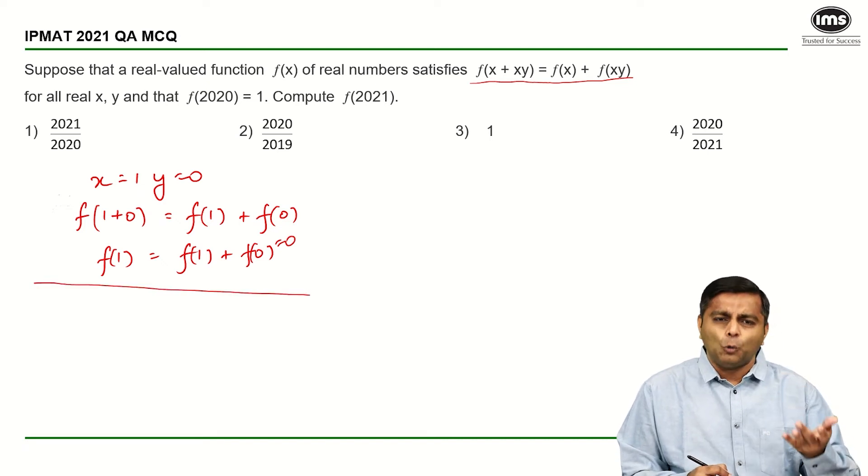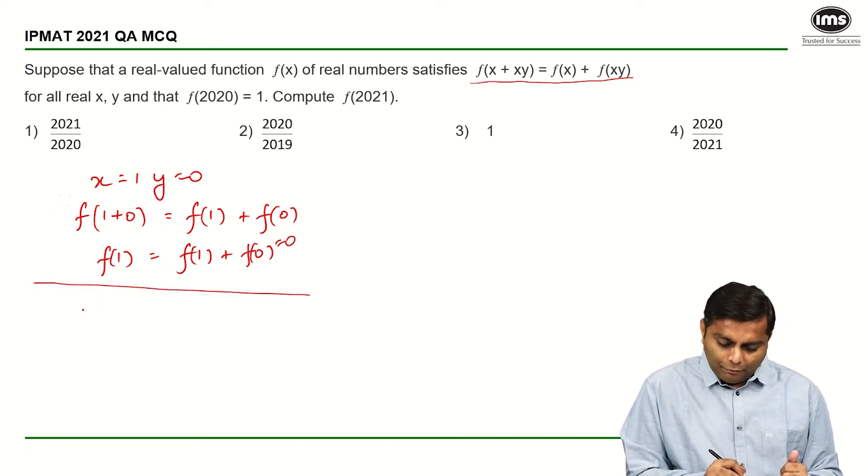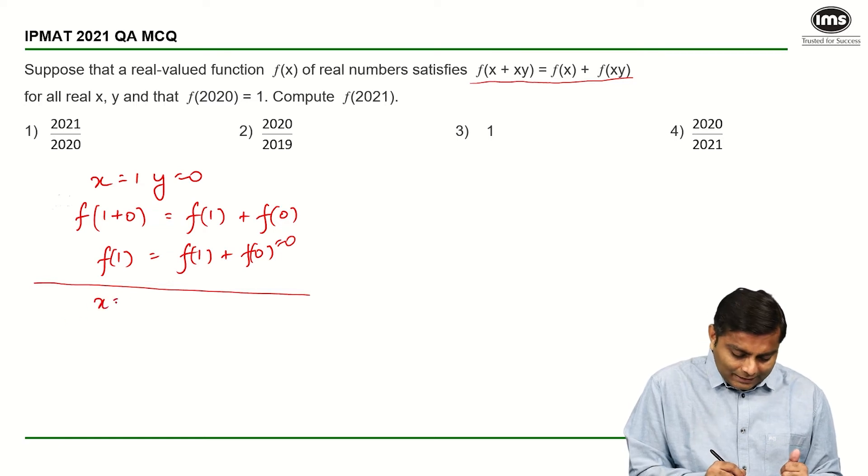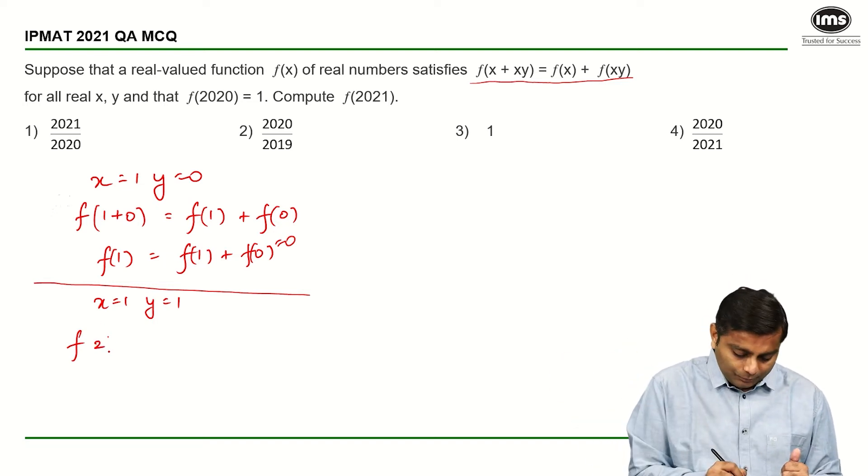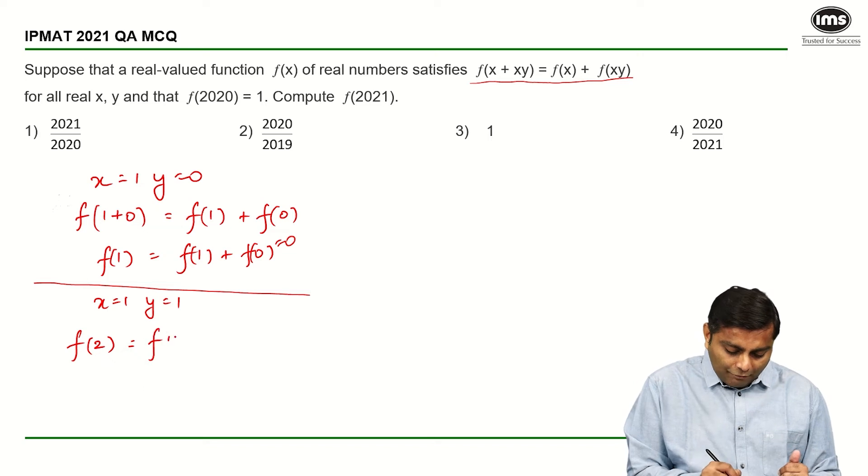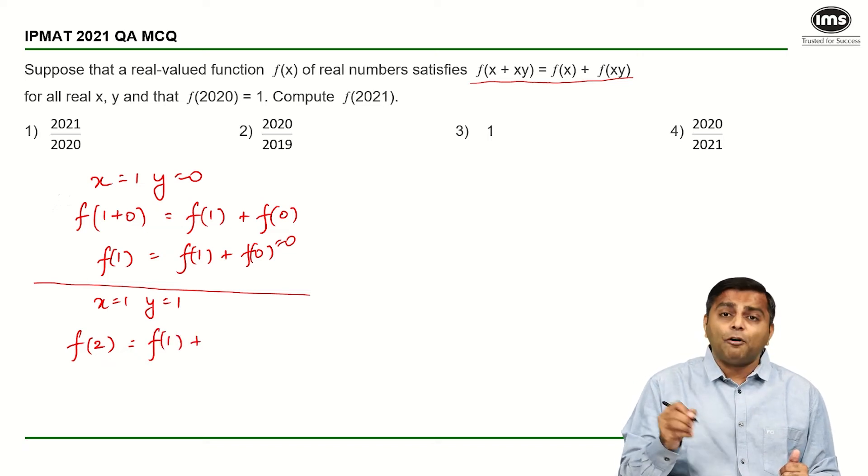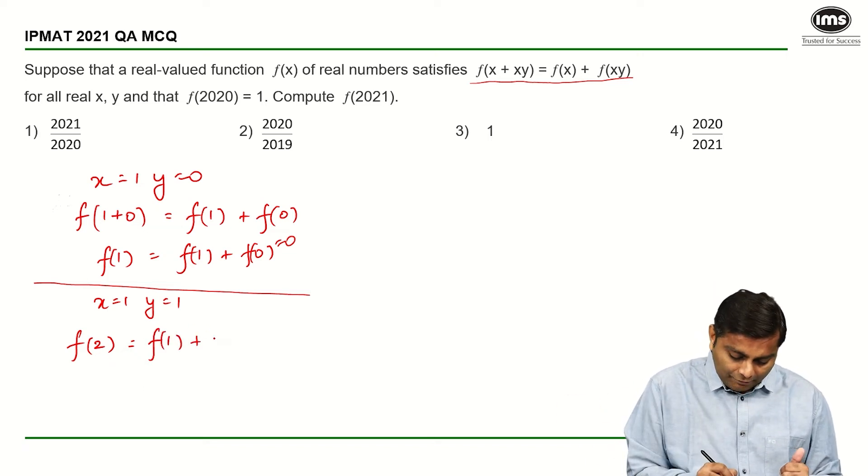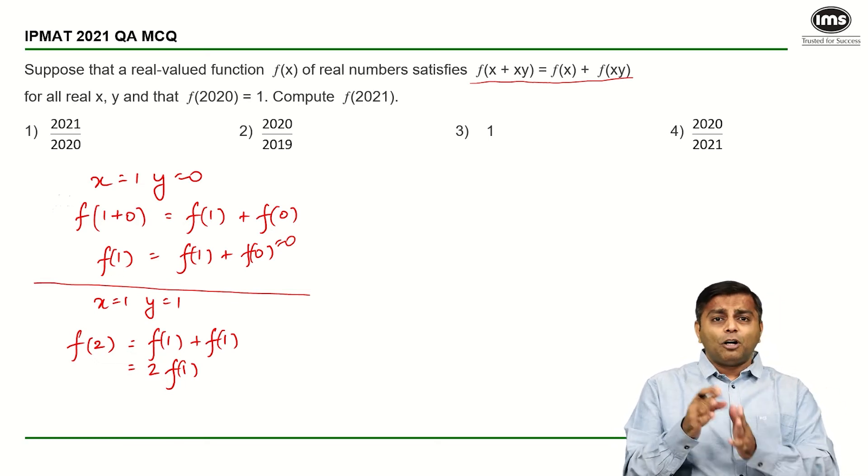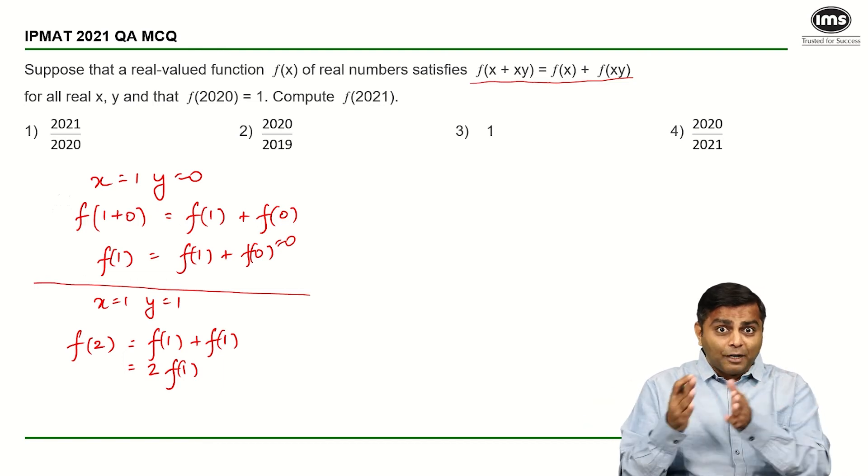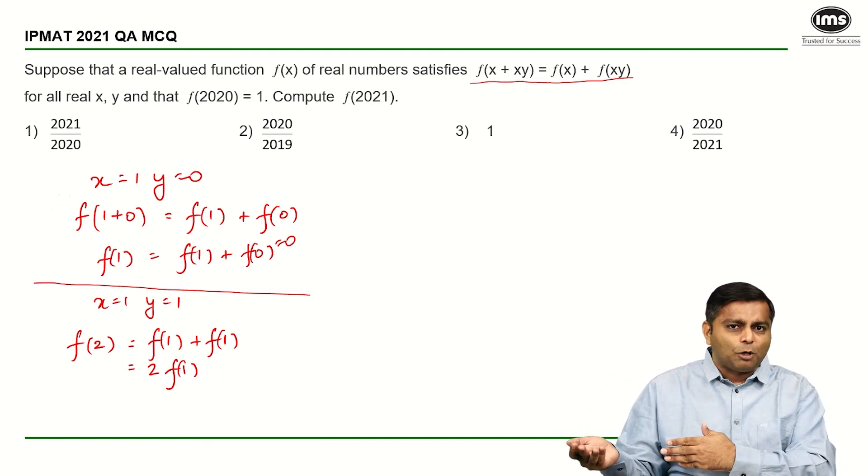Let us try and go to f(2). For going to f(2), we can try x = 1, y = 1 now. On the left hand side, we have 1+1·1, so f(2). This is going to be equal to f(1) + f(1·1), which is again f(1). So f(2) is 2 times f(1). By now, you should be able to see something. f(1) is 1 times f(1), f(2) is 2 times f(1) is what we got.